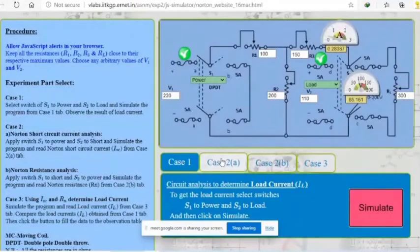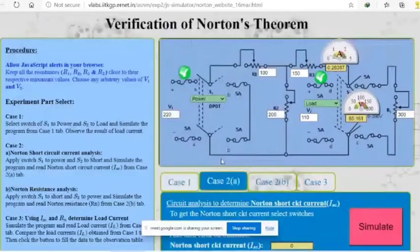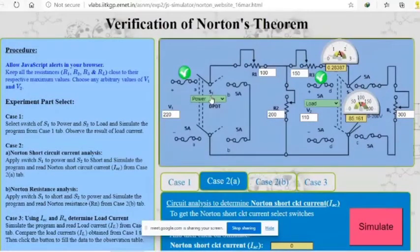In case 2 first part, we will apply S1 with power only but at S2 we will short circuit the problem. Now by doing this we will be able to find the short circuit current using simulator which is 0.67692.